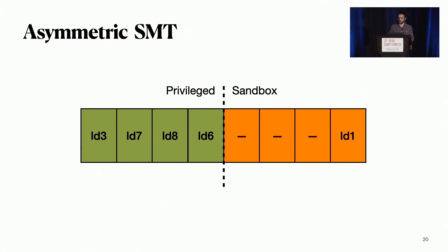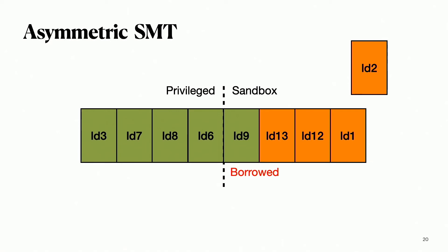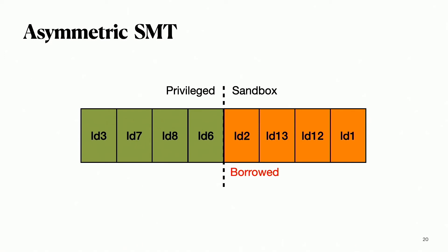The idea is to reserve resources to the sandbox thread and make it run in a constant and predictable way. For example, we look at the load queue and reserve half of the load queue entries to the sandbox thread — so far exactly similar to static partitioning. But usually there are many cycles where the sandbox does not use all of its load queue entries. The privileged thread can then borrow an entry from the sandbox partition. However, we must ensure that we can immediately return the borrowed resource if the sandbox thread needs it, so borrowing needs to be completely transparent from a sandbox perspective. If we do that, we need to reissue the privileged instruction that we just flushed to ensure correct execution of the privileged thread.